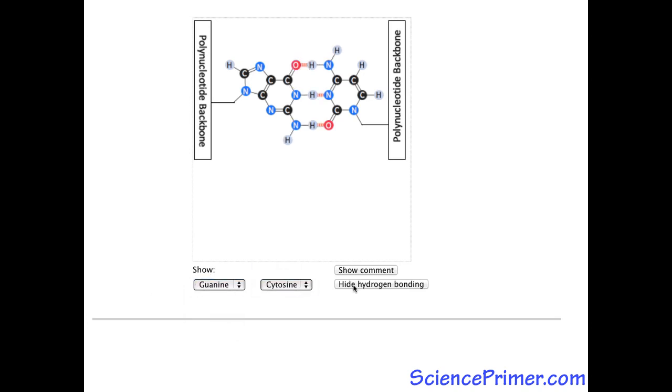Three hydrogen bonds form between guanine and cytosine, and two hydrogen bonds form between adenine and thymine, and between adenine and uracil.